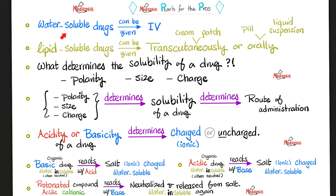What determines the solubility of the drug — water soluble versus lipid soluble? The polarity, the size, and the charge. These three factors determine the solubility, which determines the route of administration — whether intravenous, transcutaneous, or oral. Some medications are more acidic, others more basic. Acidity or basicity determines whether the medication is charged or not. If charged, it's ionic — which is polar, which is water soluble. If the medication is basic and water insoluble, we can react it with an acid: acid plus base equals salt plus water — a neutralization reaction — and this salt will be water soluble. Conversely, if the medication is acidic and water insoluble, it can react with a base to achieve the same result, converting it into something water soluble.